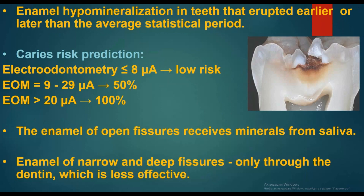Enamel hypermineralization occurs in teeth that erupted earlier or later than the average statistical period. Caries risk prediction uses electroodontometry: about 8 µA indicates low risk; 9 to 29 µA represents 50% risk; and more than 20 µA represents 100% risk.